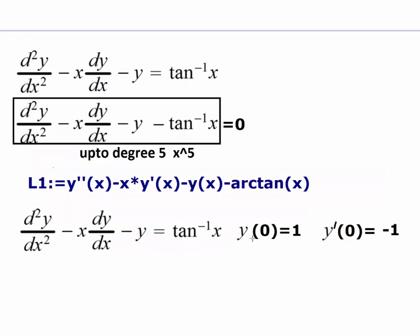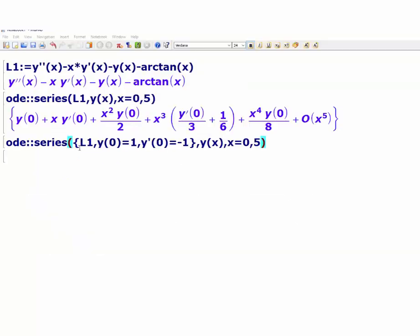Now say we have the initial values given. Say Y at 0 is 1 and Y prime at 0 is negative 1. We can enter those, so just put this all together as an initial value problem. That is L1 with Y at 0 equals 1 and Y prime at 0 equals negative 1. Doing that will give you the solution of this initial value problem.